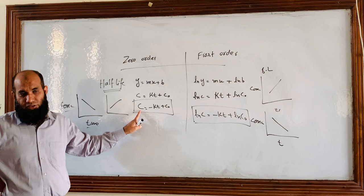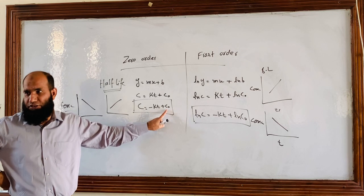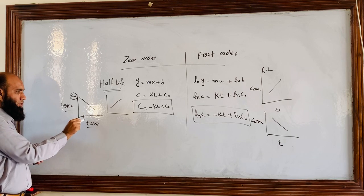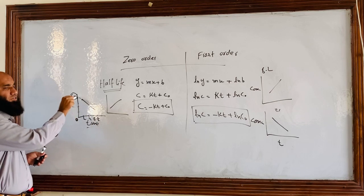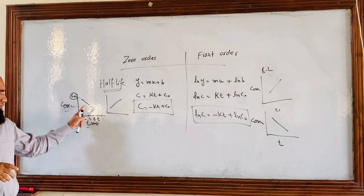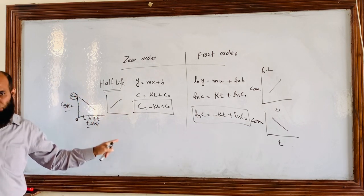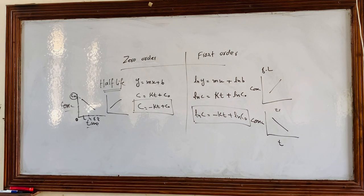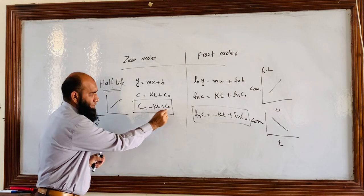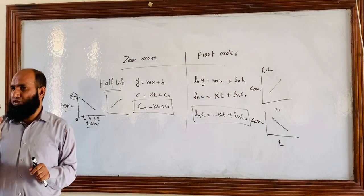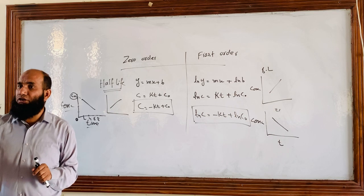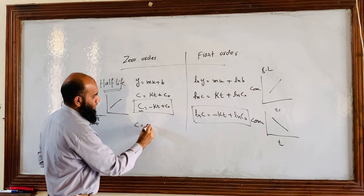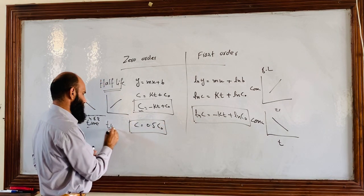C is the concentration on the y-axis, and C₀ is the initial concentration. When the concentration at zero time is C₀, it decreases over time — at 2 hours, 4 hours, 6 hours, 8 hours. According to the half-life definition, when C becomes equal to 0.5C₀, that time is called half-life. For example, if the initial concentration is 100 mg/mL and after 30 minutes it becomes 50 mg/mL, then 30 minutes is the half-life.